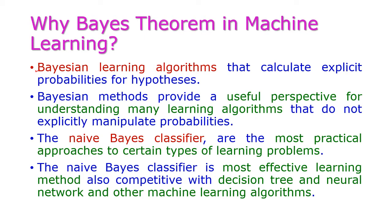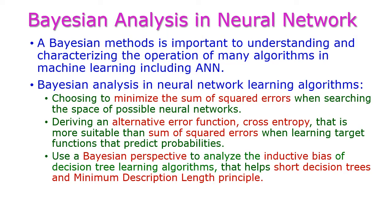Bayesian learning algorithms calculate explicit probabilities for hypothesis, which is very useful for understanding many learning algorithms. The Naive Bayes classifier, which is actually an extension of Bayes theorem, is one of the most effective learning methods when compared to the decision tree, neural network, and other machine learning algorithms.